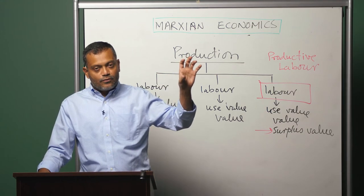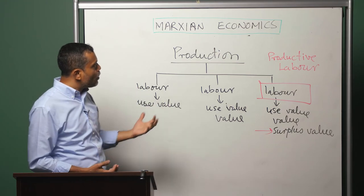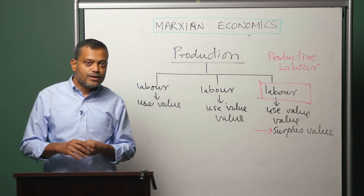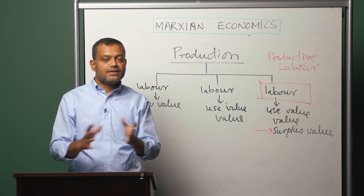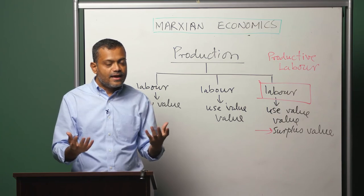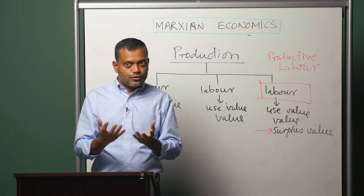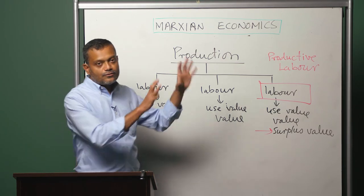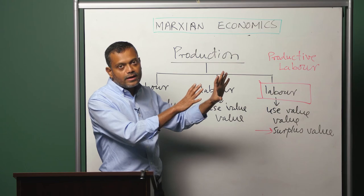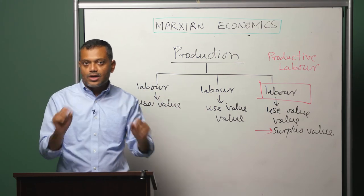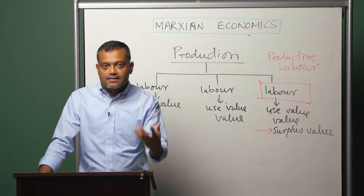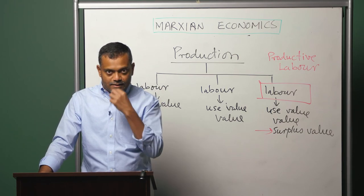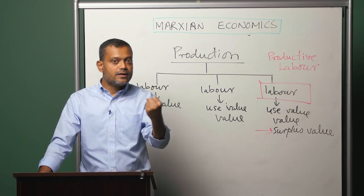The commercial profit we have seen is an example of labor involved in an activity which does not create value, because it is pure trade. Therefore, the incomes of every person involved in trading activity come out of the surplus value created by productive labor elsewhere in the economy. That is why commercial profit is an example of profit earned by a group of capitalists without having created that surplus value themselves.